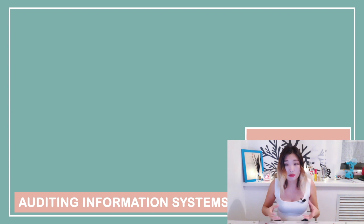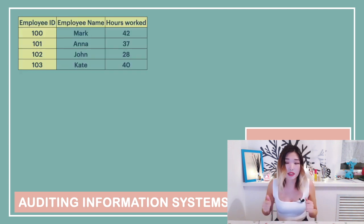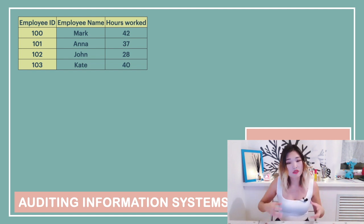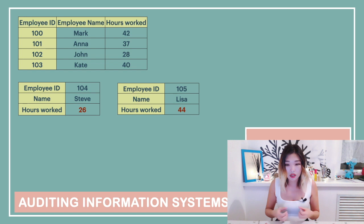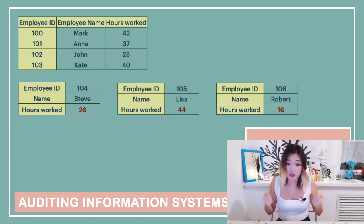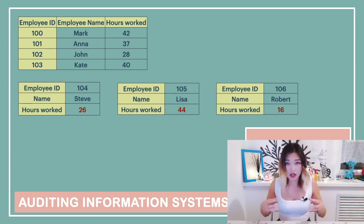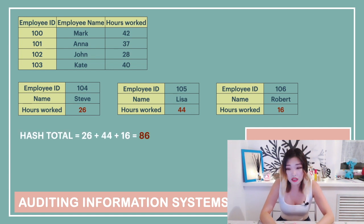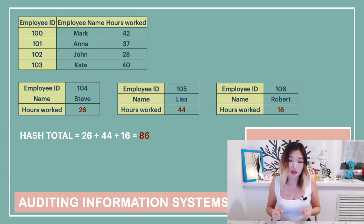To understand what hash totals mean, let's take a simple example. Let's say we have a database with employee timesheet records — it looks something like this — with an employee ID, employee name, and hours worked by every employee. If we need to insert three more records into this system, we may use hash totals to ensure they are input accurately. We choose a numerical attribute, in this case hours worked, and calculate manually the sum: 26 plus 44 plus 16. Then we compare this manually calculated sum to the one calculated by the system after we upload these three records to the computer.